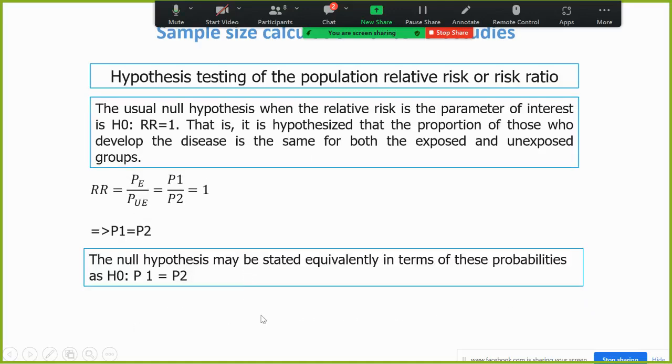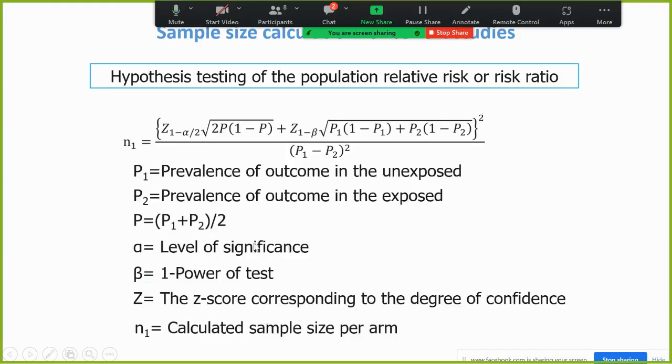Based on the null hypothesis, the sample size calculation formula for cohort study is n1 equal to this function, where p1 is the prevalence of outcome in the unexposed group, here unexposed group means wearing mask. And p2 is equal to prevalence of outcome in the exposed group, exposed group means not wearing mask. And p is equal to the average of p1 and p2, and the other information is same like the previous session.